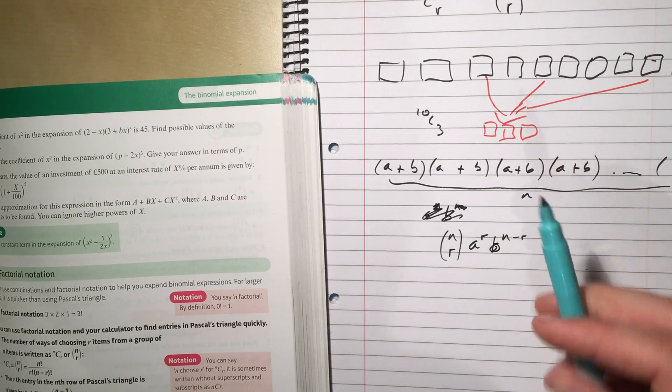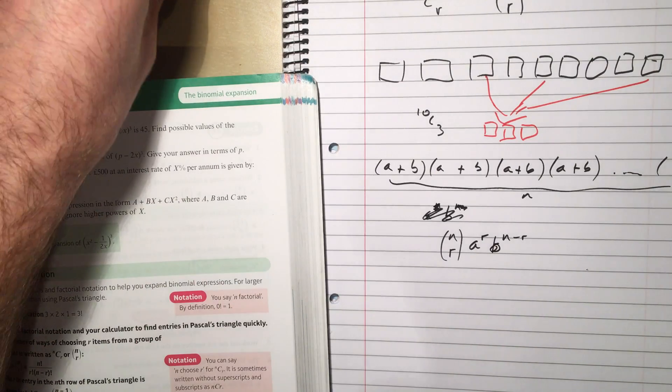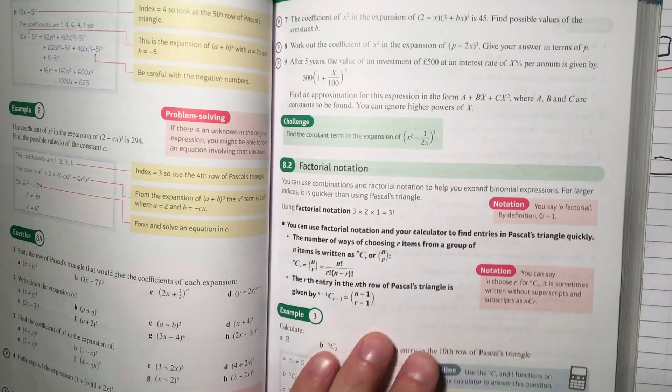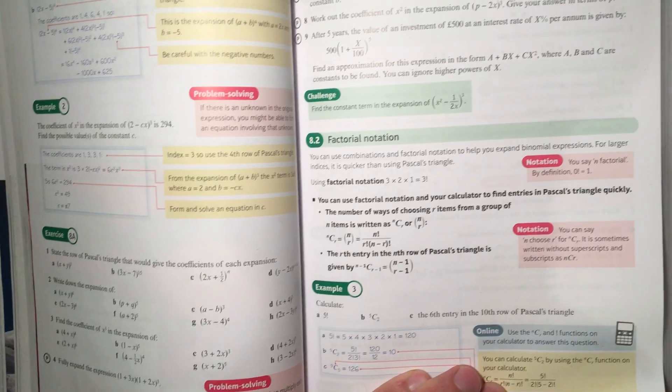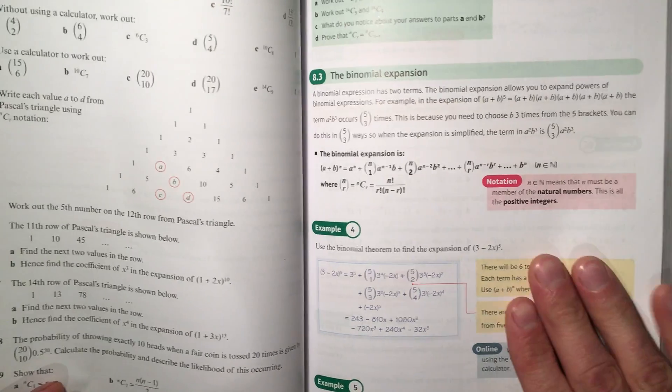Because I've picked an a out of r of the brackets. So that's where this number, n choose r, and the binomial expansion sort of meet, and that's why we're going to need to get to know this number. Now, this exercise in section 8.2 is just about getting to know this number, getting to understand the factorial notation, and so on.